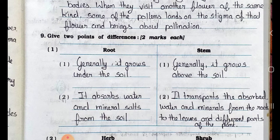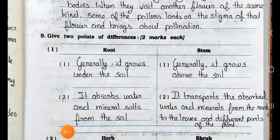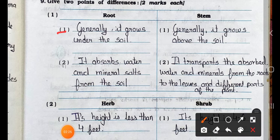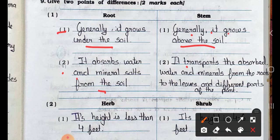Give 2 points of difference, 2 marks each. Number 1: Distinguish between root and a stem. Point 1: Generally, root grows under the soil, and stem generally grows above the soil. Point 2: Root absorbs water and mineral salts from the soil, and stem transports the absorbed water and minerals from the roots to the leaves and different parts of the plant.